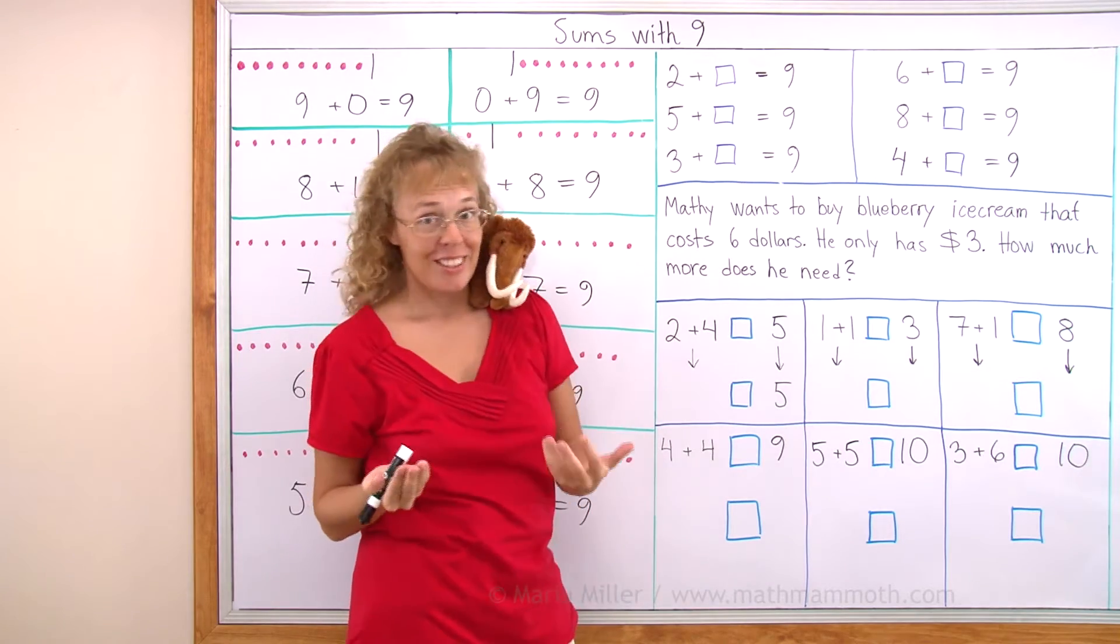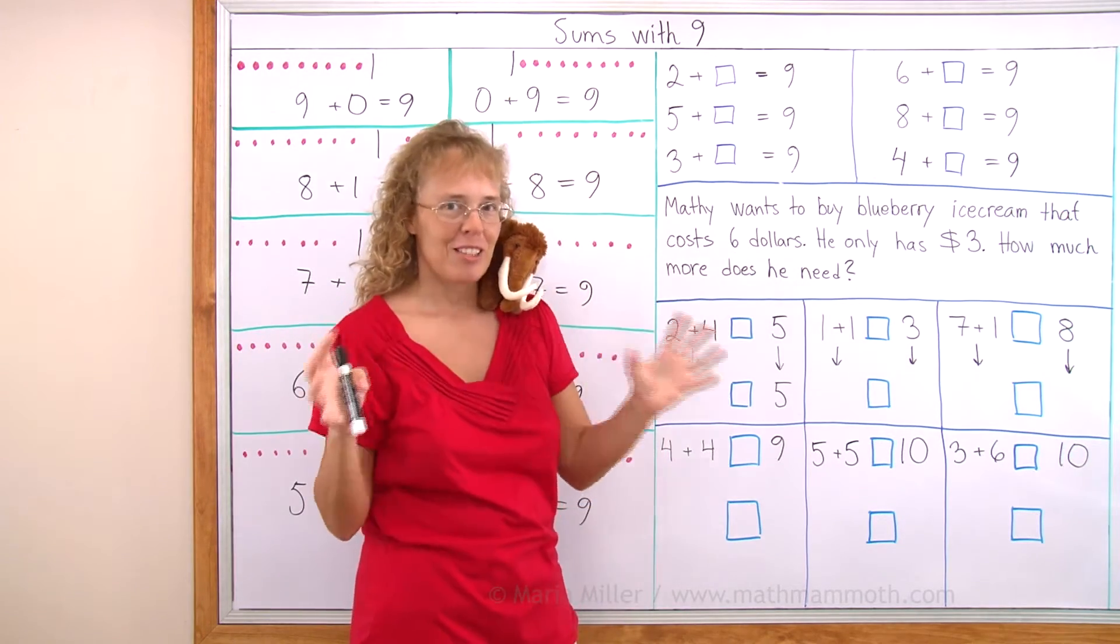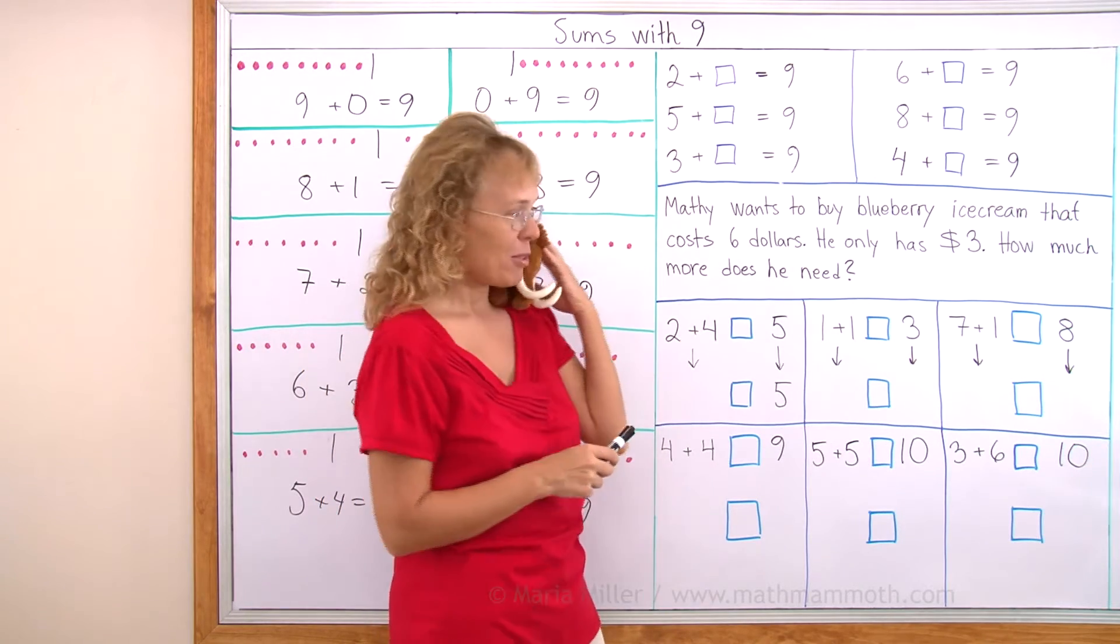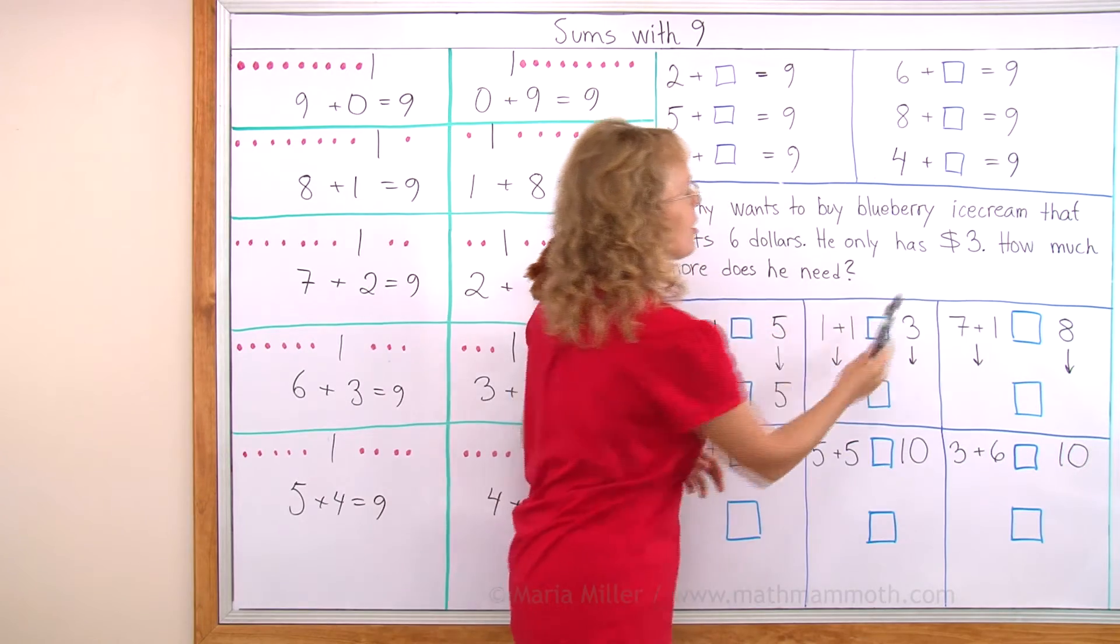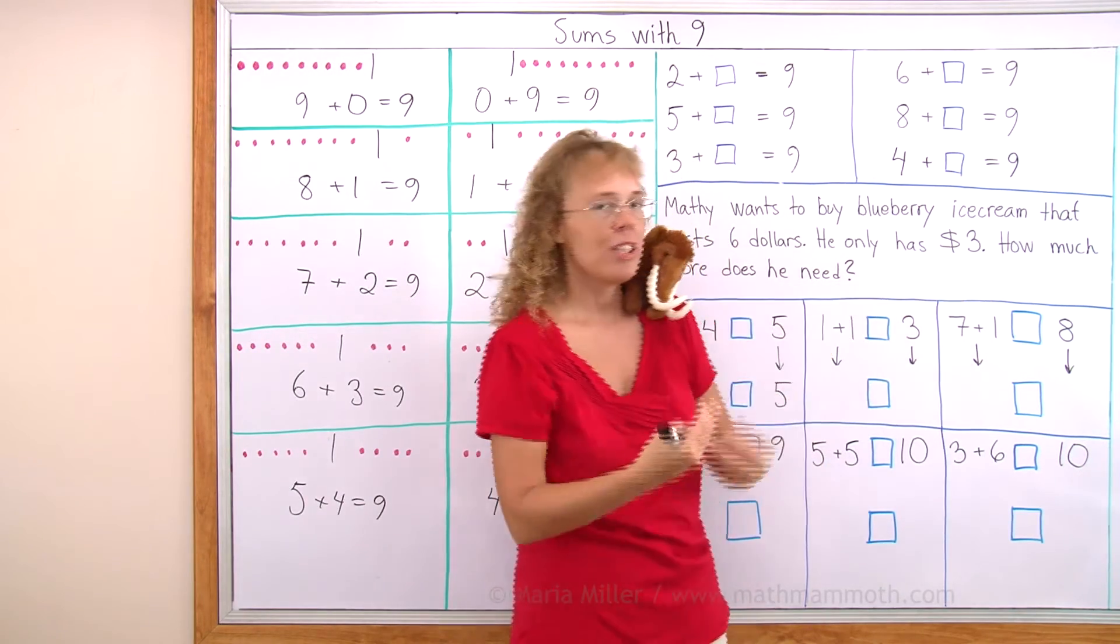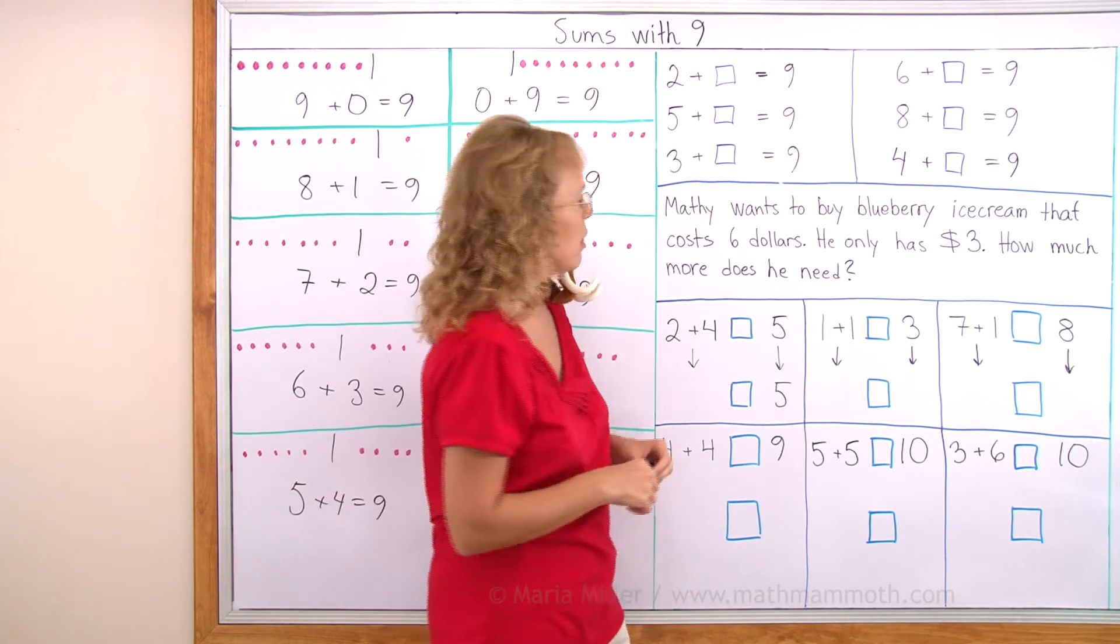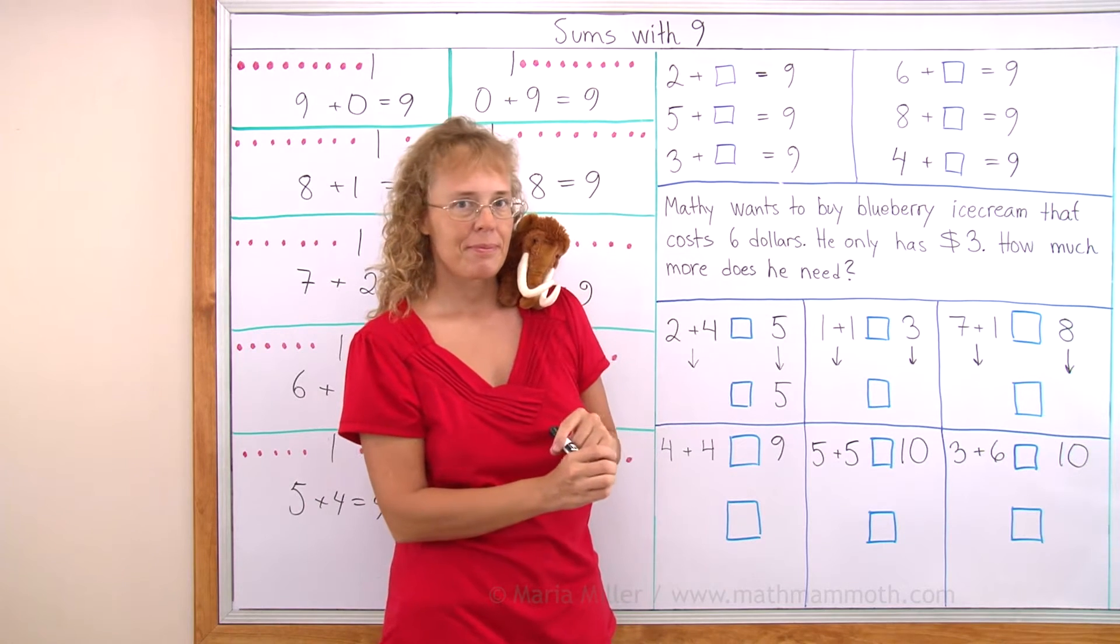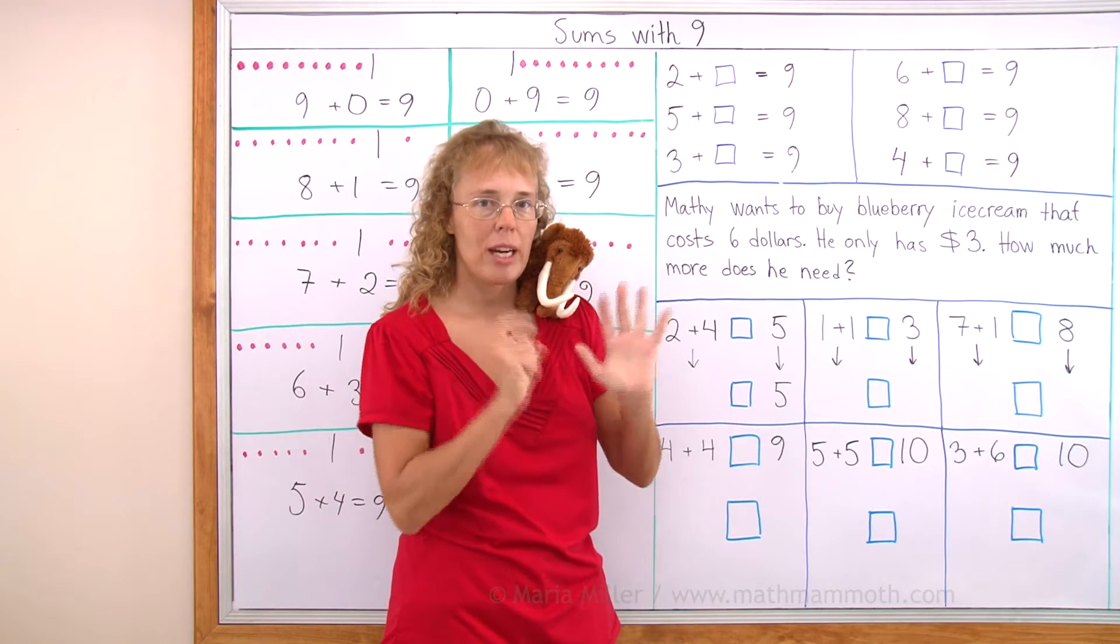Matthew wants to buy blueberry ice cream that costs $6. Must be a big tub of ice cream. But you have a mammoth appetite, right? He only has $3. This thing here means dollars, $3. You read it. $3. Matthew only has $3, so he can't buy it. How much more money does he need? He has $3.